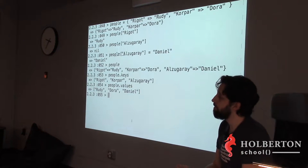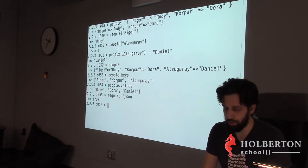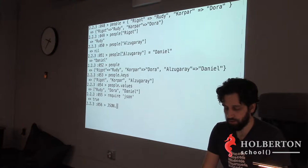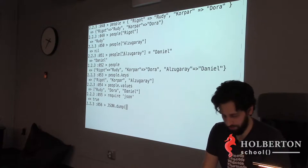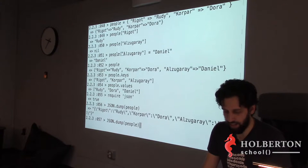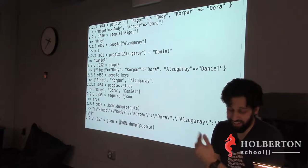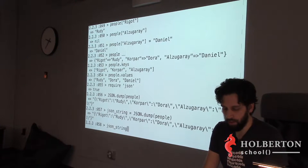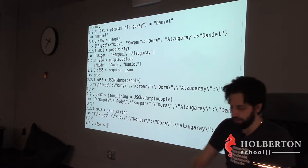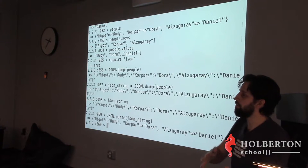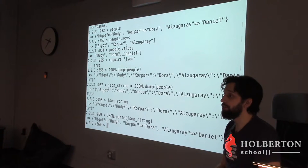I'll put that in a variable: `json_string`. Now to convert back from JSON to a hash, you use `JSON.parse(json_string)`. Going from JSON to a hash is very easy compared to Go — in Go you have to create a struct that exactly matches the keys. Ruby doesn't care; it takes what you give it and transforms it.